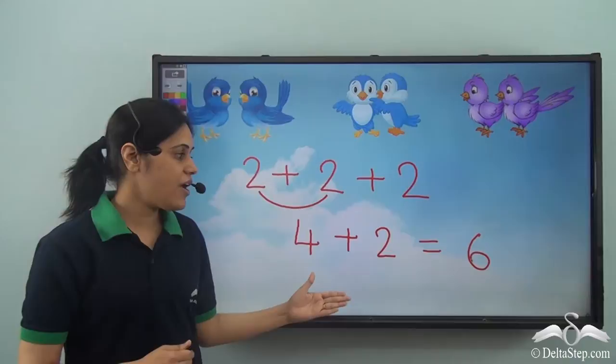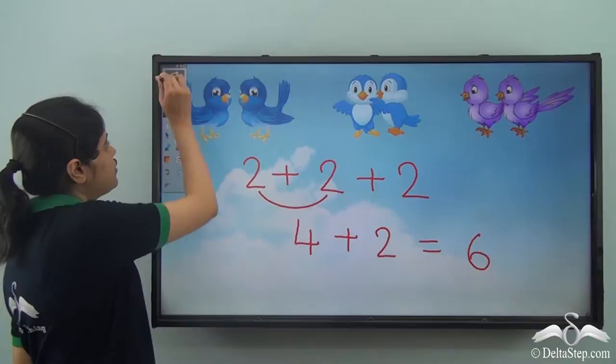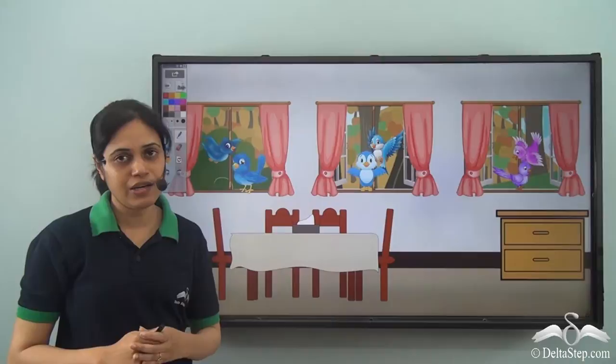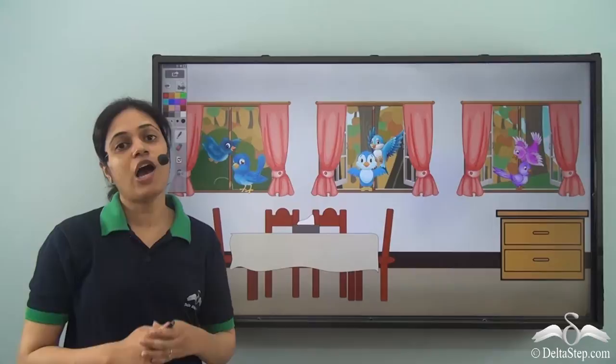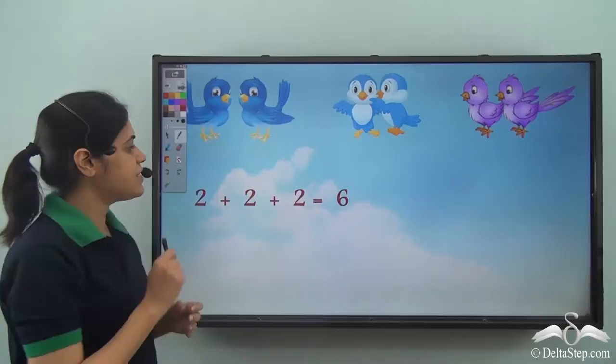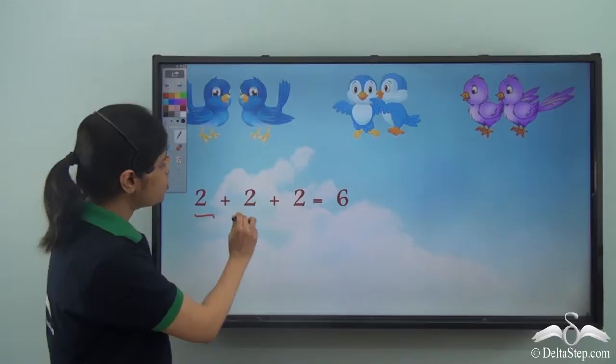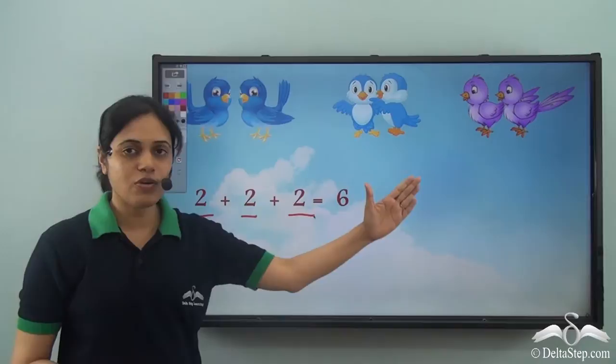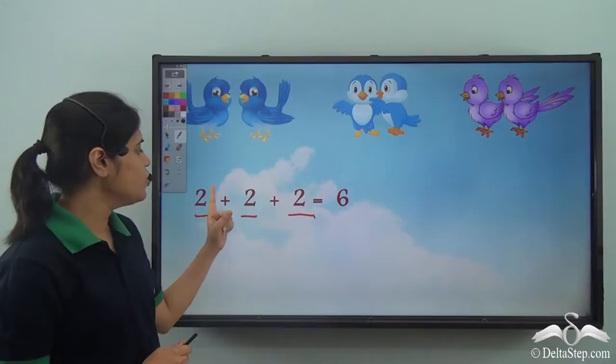But while Sarah was doing this, it took a lot of time and the birds were getting very impatient because they were hungry. Can you help Sarah do this calculation or count the number of birds in an easier manner? There are two birds on each of the three windows, so two plus two plus two gives six.